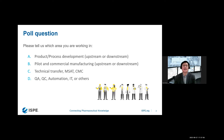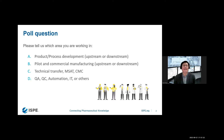I can see 27% from process and manufacturing, a little bit small — something like 8%. Technical transfer, MSAT, CMC about 20%. And QA, QC, automation, IT, and all the others about 46%. Thank you very much for the interaction.